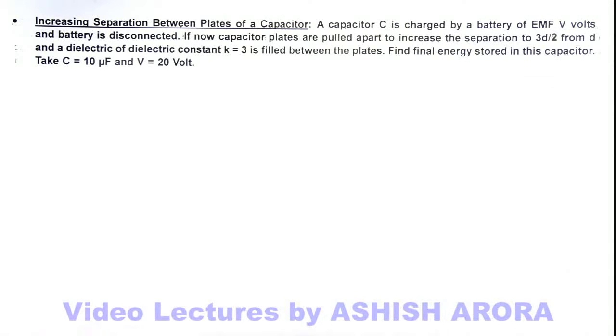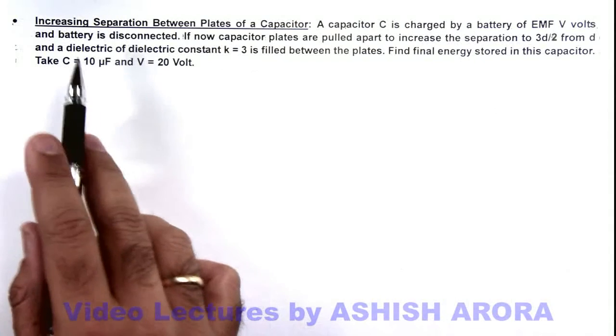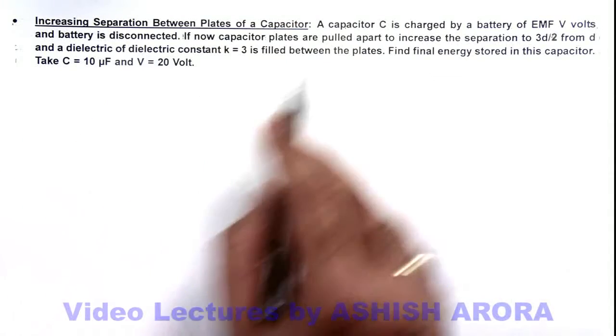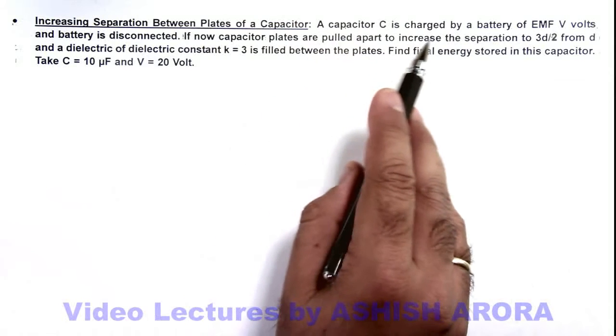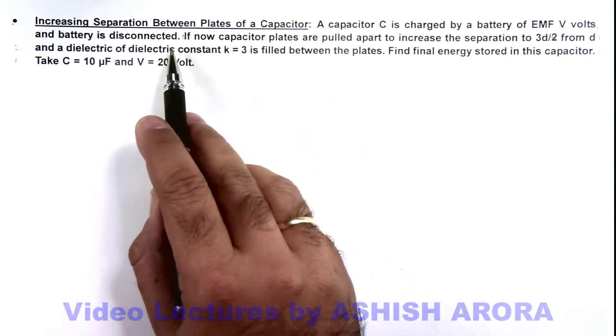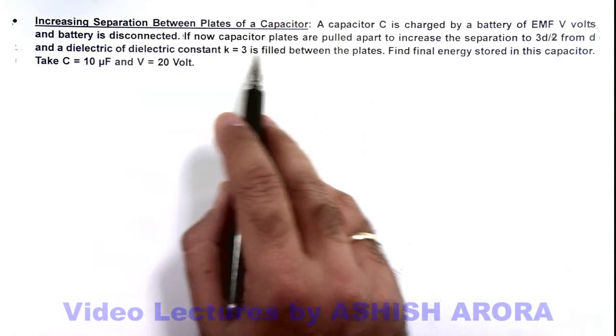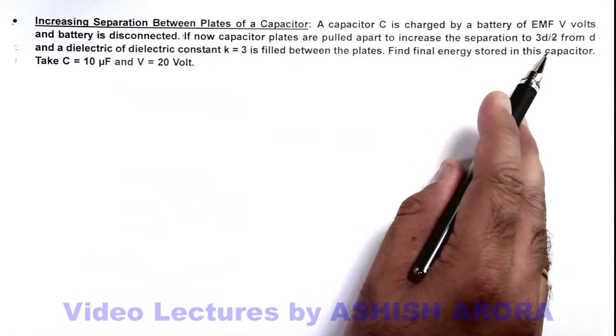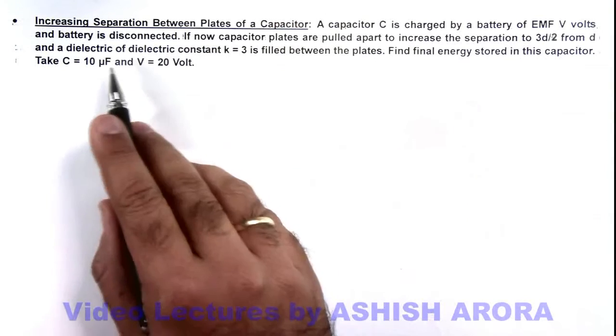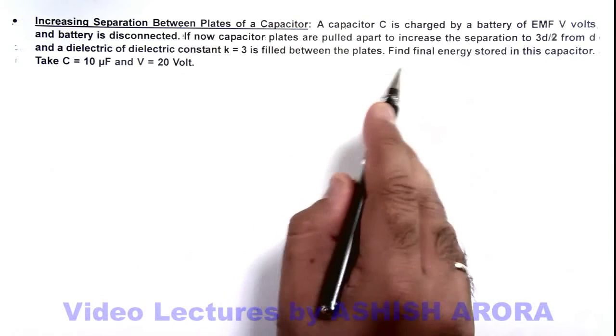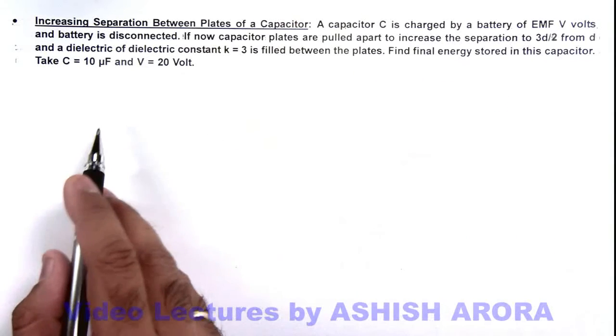In this illustration we'll study about the increasing separation between plates of a capacitor. Here we are given that a capacitor C is charged by a battery of EMF V volts and the battery is disconnected. If now capacitor plates are pulled apart to increase the separation to 3d/2 from d, and a dielectric of dielectric constant 3 is filled between the plates, we are required to find final energy stored in the capacitor.